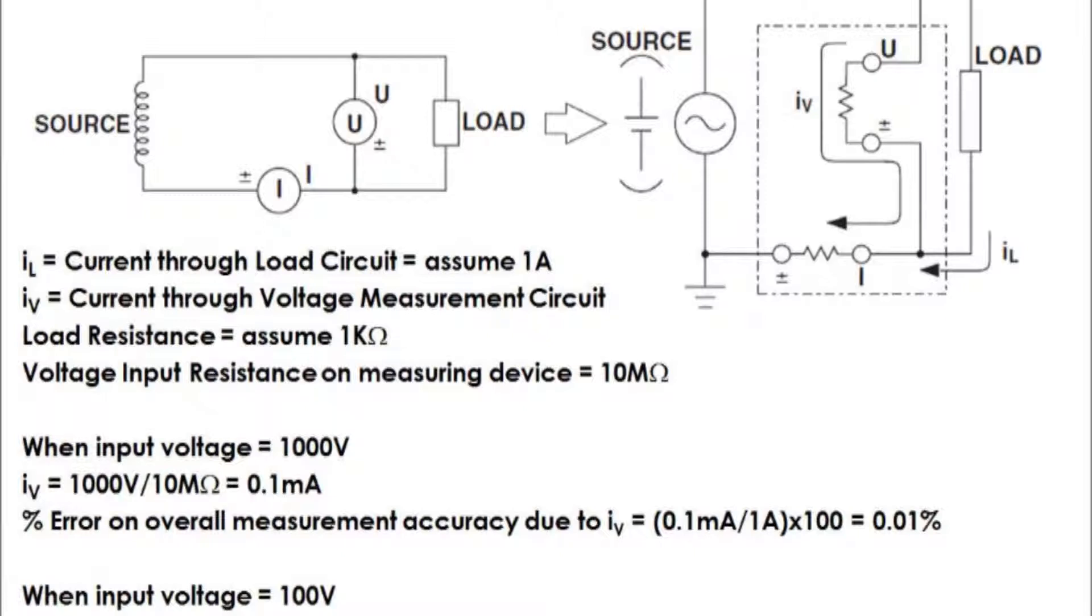In this circuit, the current measurement circuit measures the sum of currents flowing through the load, which I am going to call IL, and the current flowing through the voltage measurement circuit, which I will call IV. Because the current flowing through the load is IL, IV is the amount of error on the total current measured by the device.